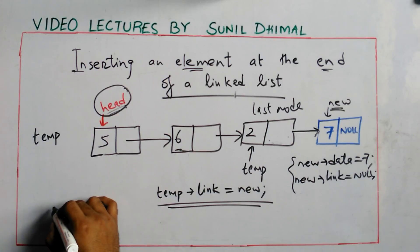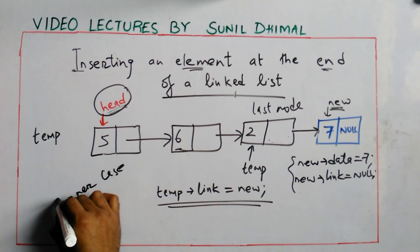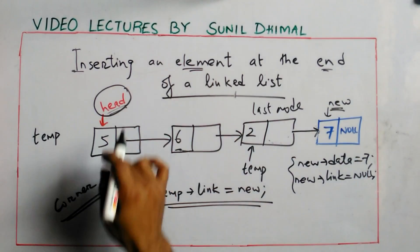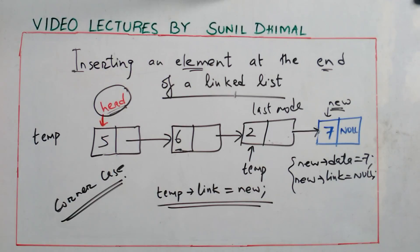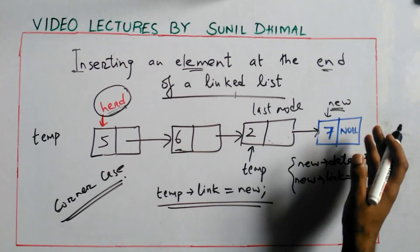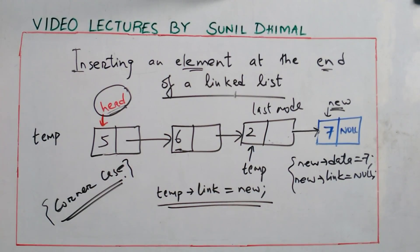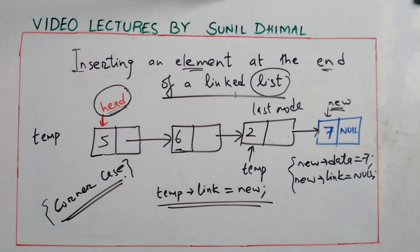There is one corner case to consider: the list given to you may be empty. In the previous example, I assumed the list had three elements. But if the list is empty, whatever element you are inserting becomes the first element. Let's see how to handle this corner case.